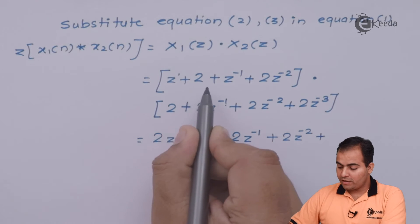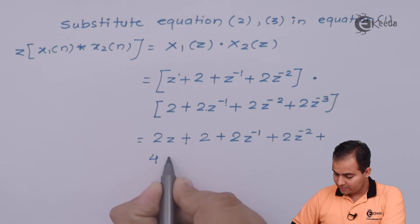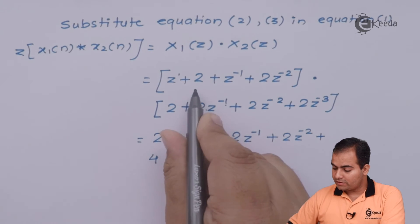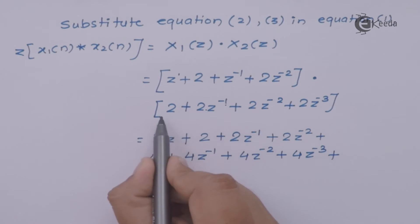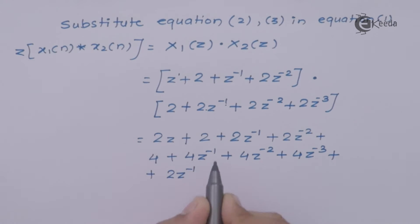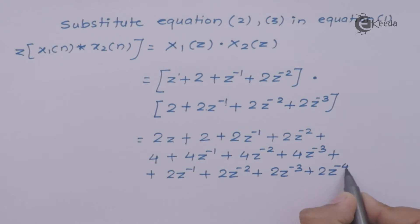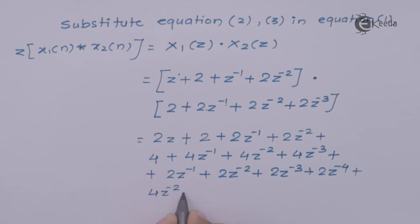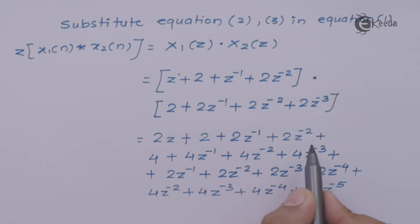Next, multiply 2 (from X1(Z)) with all terms of the second bracket: 2 times 2 gives 4; 2 times 2Z inverse gives 4Z inverse; 2 times 2Z to the minus 2 gives 4Z to the minus 2. Then multiply Z inverse with all terms: Z inverse times 2 gives 2Z inverse; and finally multiply 2Z to the minus 2 with each term of the sequence. Now collect and add all coefficients of Z, Z to the power 0, Z to the minus 1, Z to the minus 2, and so on.